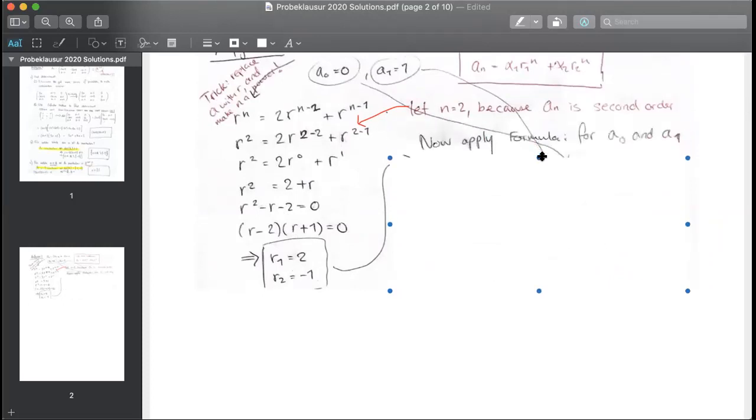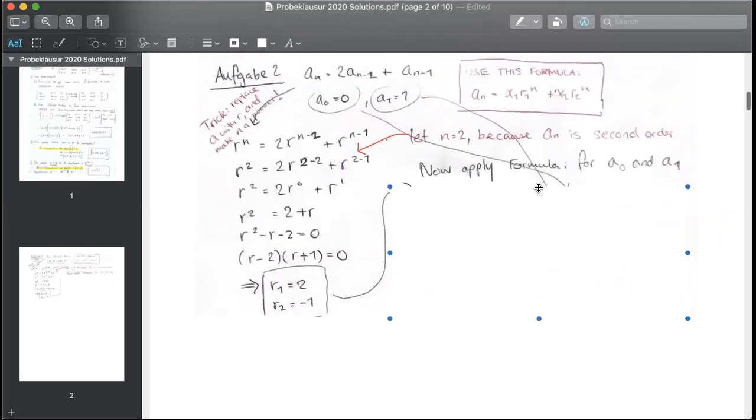And so once you get those r's, now you apply the formula over here. So you take this formula and you apply the formula for each of the terms that they gave you. You apply it for a zero and then you apply it for a one. So first let's apply the formula for a zero. So here for a zero it's the formula. So it's alpha one r one to the power of zero, because n is zero. So r to the n is going to be r to the zero plus alpha two r two to the n and n again is zero. And what does that equal? It equals zero here because they said a zero equals zero. You simplify that and anything to zero is one. So the formula you get is alpha one plus alpha two equals zero. That's one of the formulas. Save it.